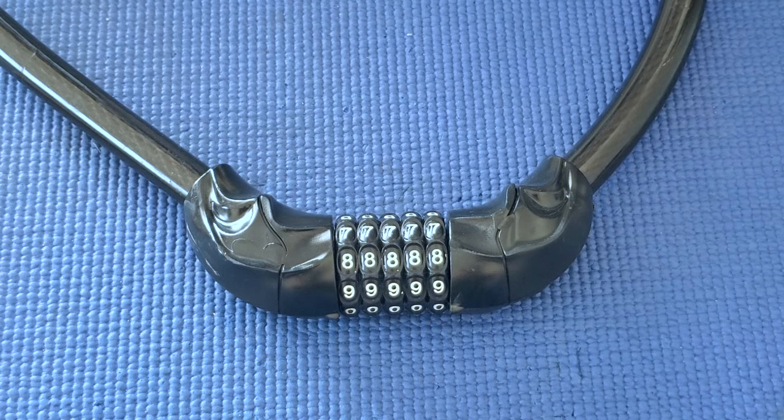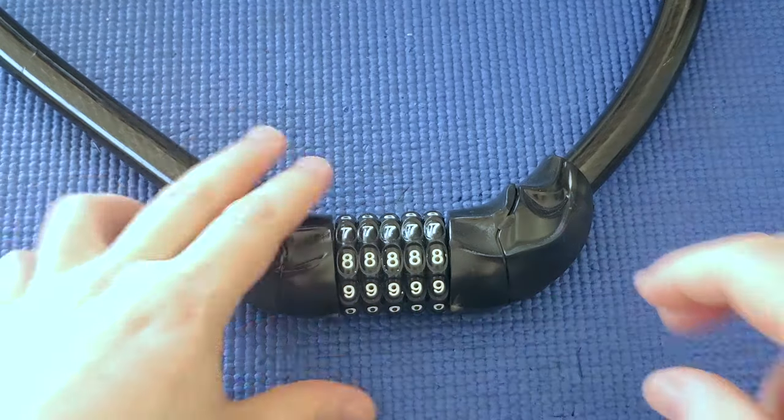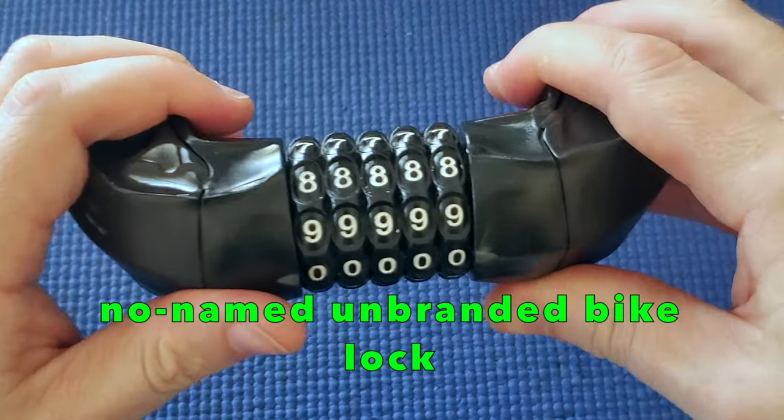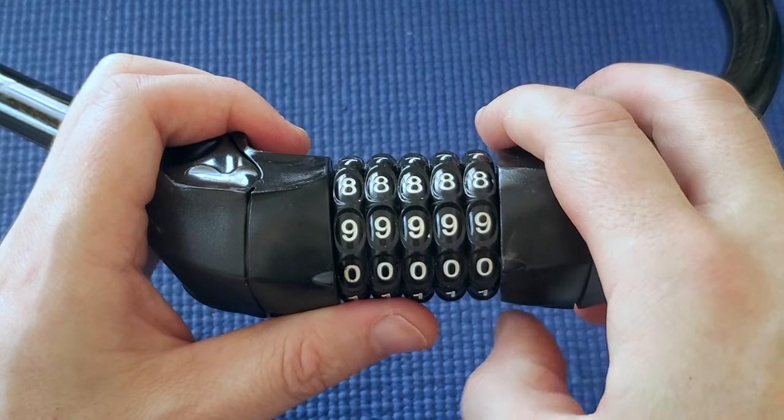Hey! In my last video I talked about using the indirect method to decode this lock. It's a no-name bike lock with five wheels. See my previous video to learn the indirect method.